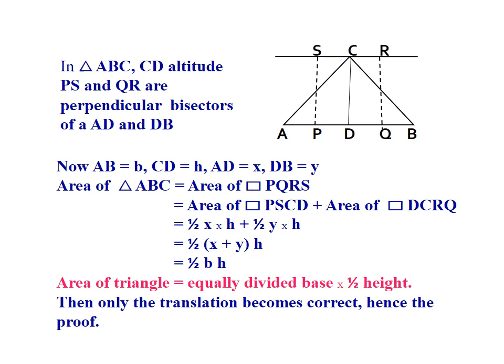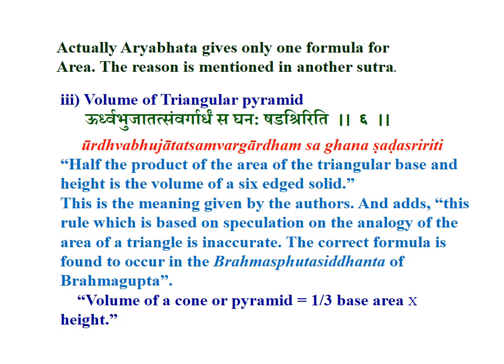In triangle ABC, CD is the altitude, PS and QR are perpendicular bisectors of AD and DB respectively. AB equals B, CD equals H, AD equals X, DB equals Y. The area of triangle ABC equals the area of rectangle PQRS, which is area of rectangle PSCD plus area of rectangle DCRQ — that is, half X·H plus half Y·H, or half (X+Y)·H, which equals half BH. Area of triangle equals equally divided base into half height. Hence the proof.